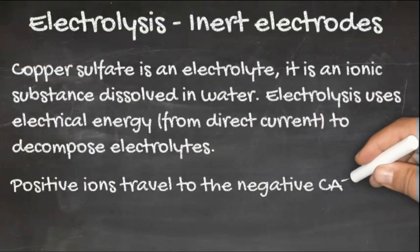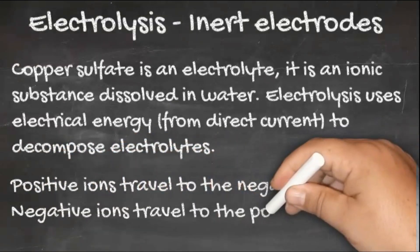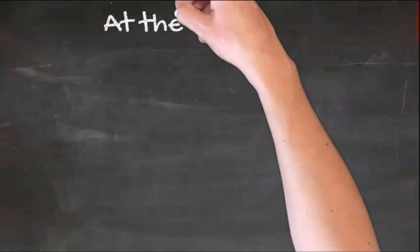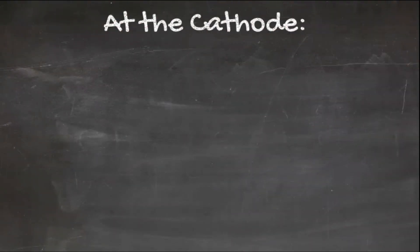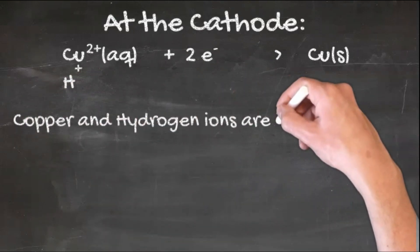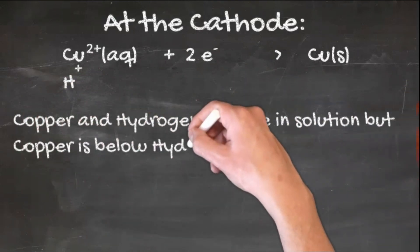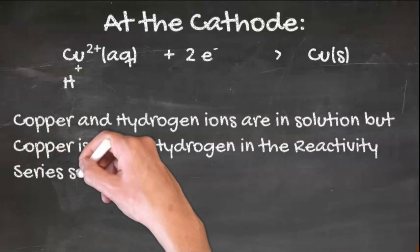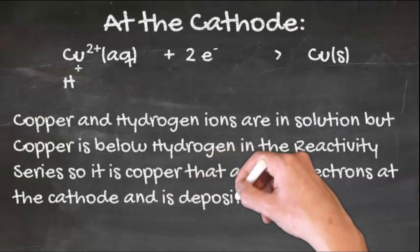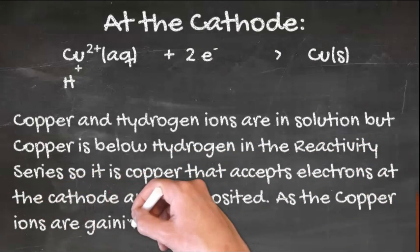The resulting positive ions travel to the negative cathode and the negative ions travel to the positive anode. At the negative cathode, copper and hydrogen ions are in solution, but copper is below hydrogen in the reactivity series and, as a result, it's copper that accepts electrons at the cathode and is deposited.